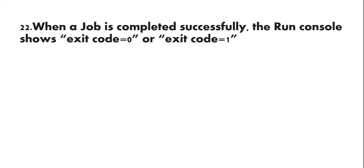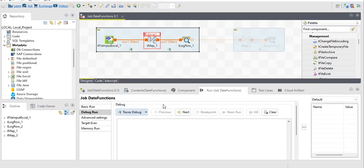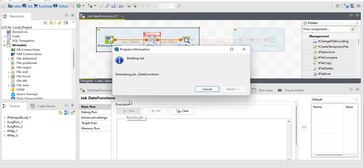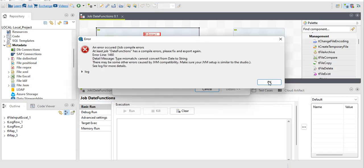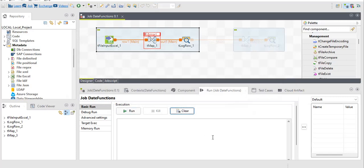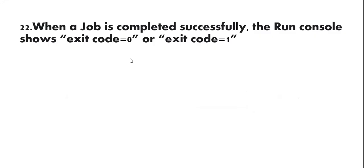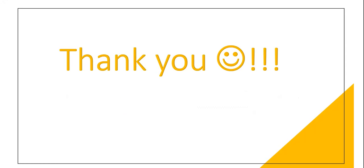This is a very important question: when a job completes successfully, the run console shows exit code equals zero or exit code equals one? In a successful case the exit code will be zero. In the case of an unsuccessful run or error, it will be equals to one.